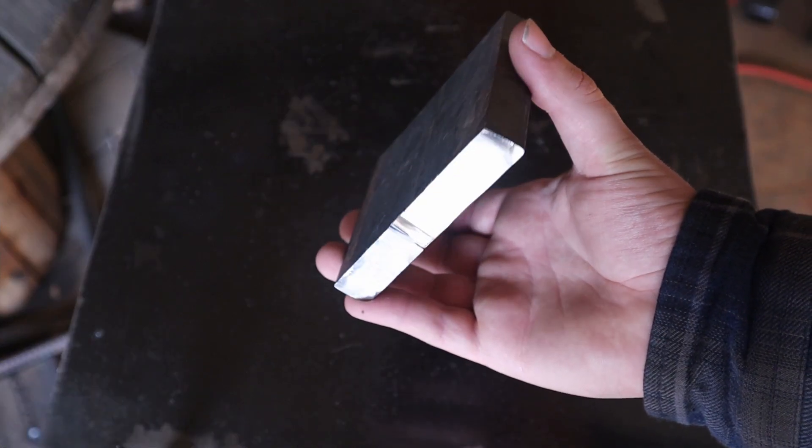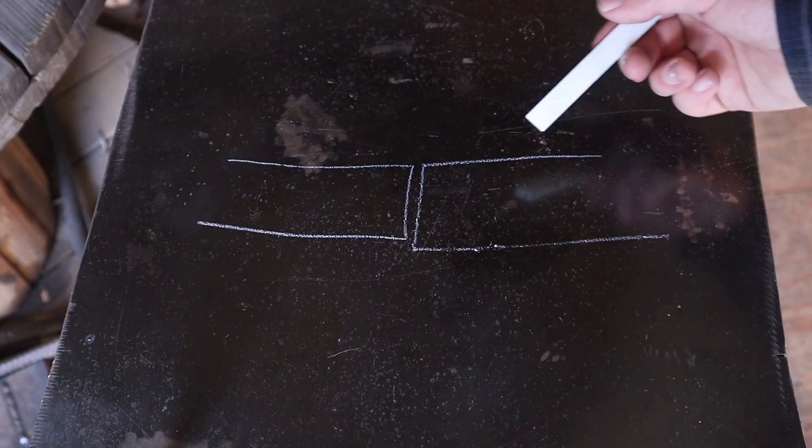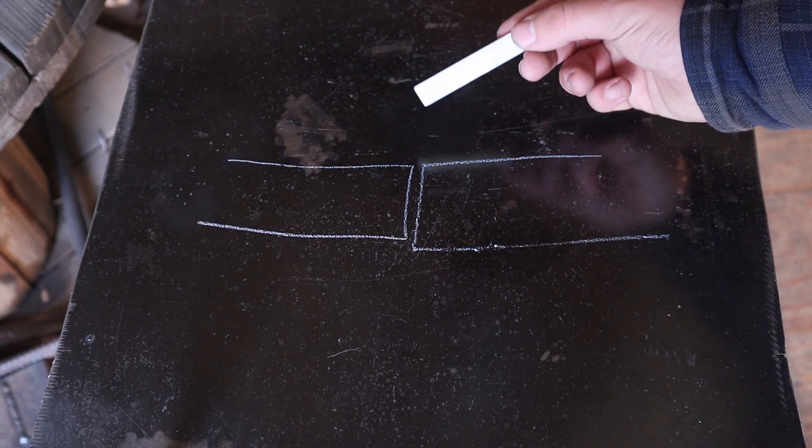Today I'm going to show you how you can get full penetration when welding thick metal. So this is a butt joint of two pieces of steel, butted together.